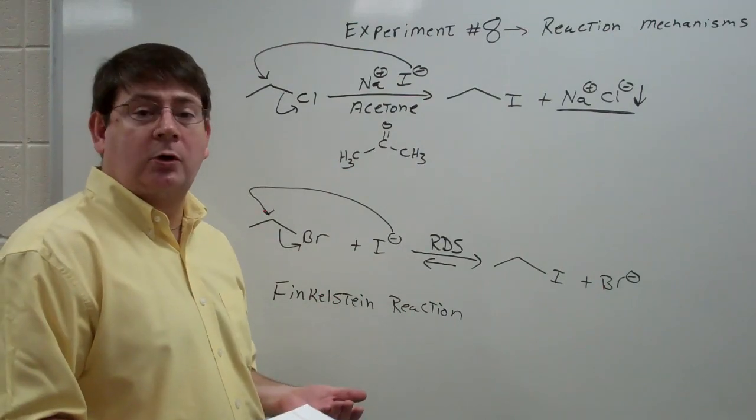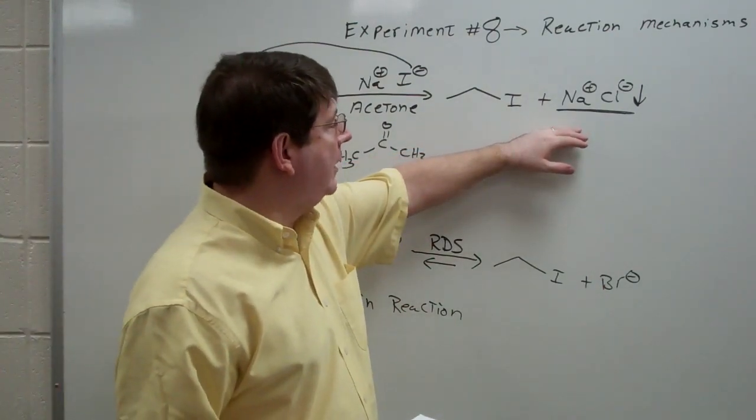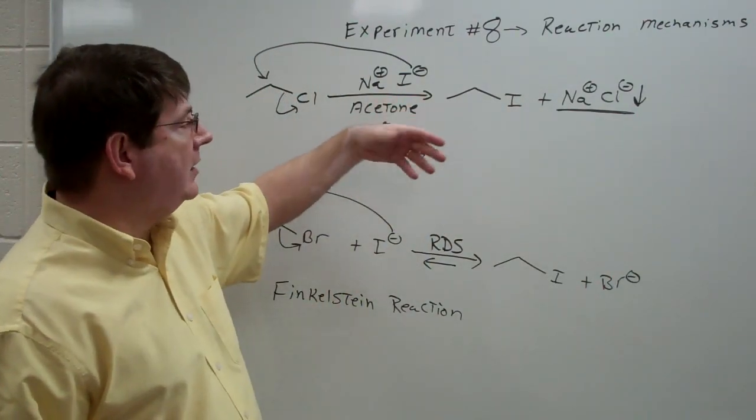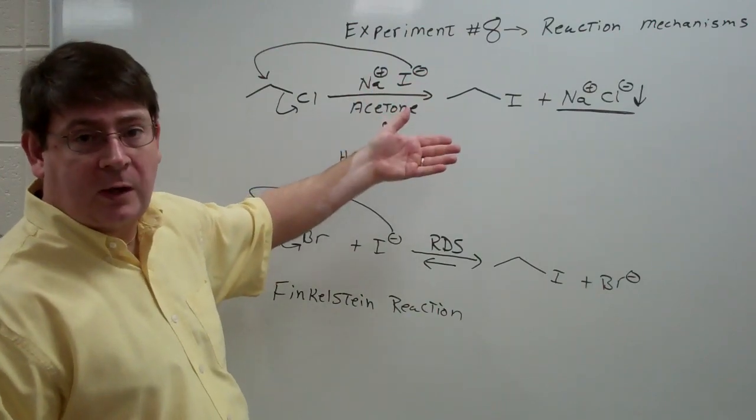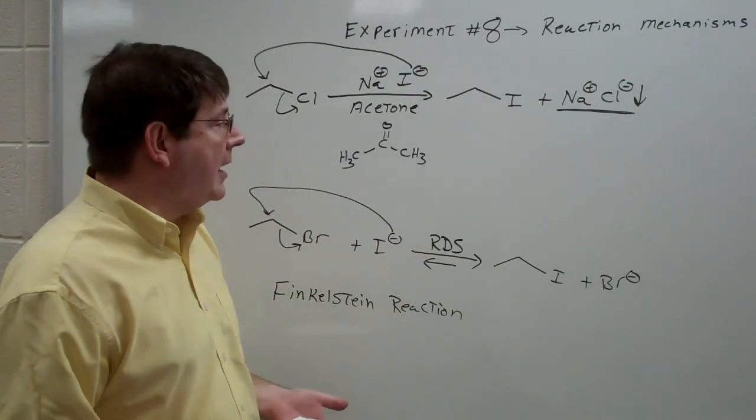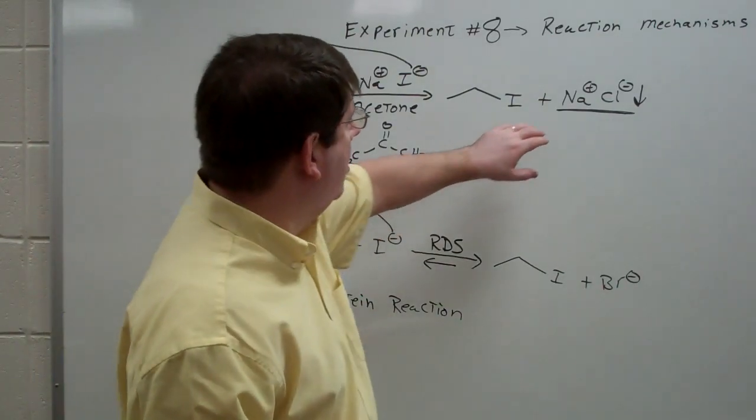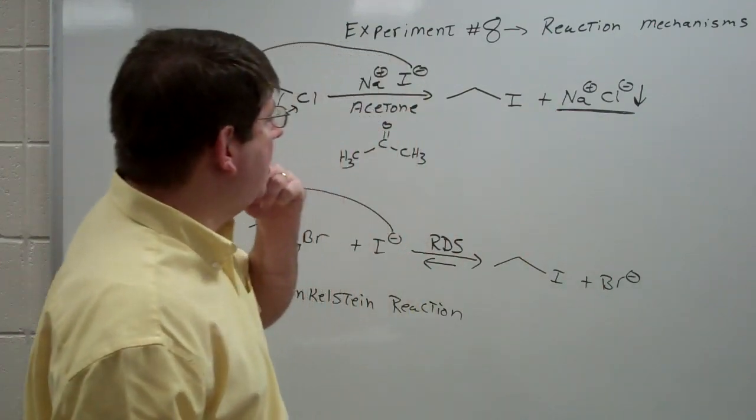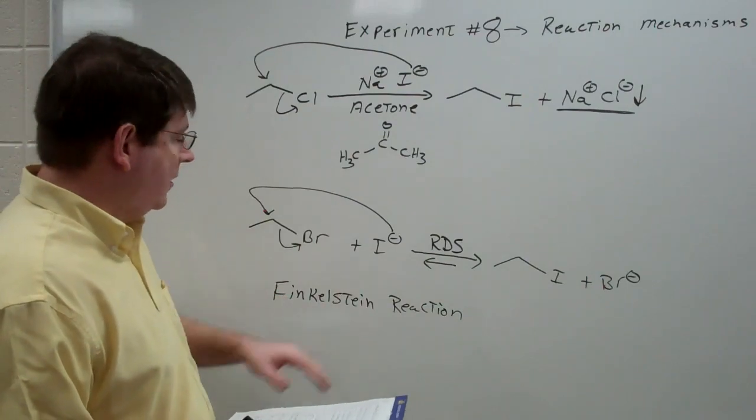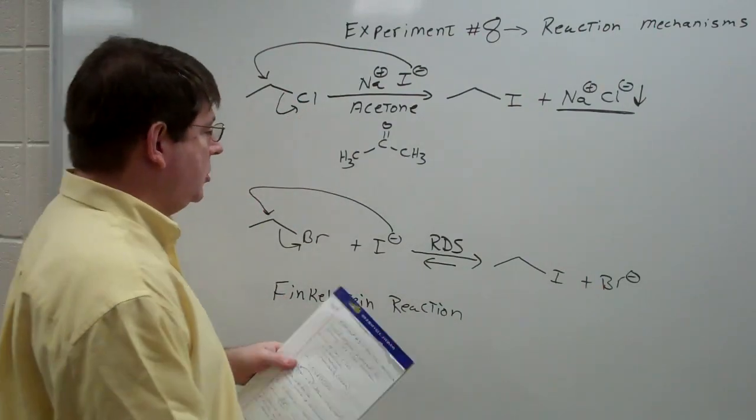And that's going to be proportional to your reaction rate. So if something forms sodium chloride very, very quickly, you know the reaction went very, very fast. If, however, you have to wait 10, 15, 20 minutes before you see a precipitate, you know that that reaction is going to be relatively slow. And if it goes much longer than that, you know the reaction didn't occur at all. So we're going to look for the appearance of sodium chloride, being that it's not soluble in acetone, it falls out of solution through this Finkelstein reaction process. So that's how we're going to test for the SN2 reaction.